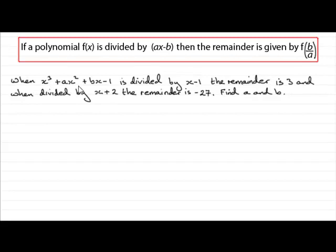We've got when x cubed plus ax squared plus bx minus 1 is divided by x minus 1, the remainder is 3. And when divided by x plus 2, the remainder is minus 27. And what we've got to do is find out those constants a and b.